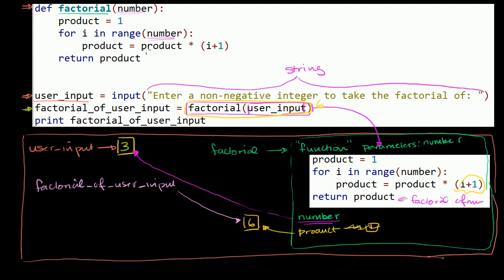And then we run this as if number was 3, and then we return product, which is going to be the factorial of number. And so this whole thing evaluates to the factorial of whatever was in here, so the factorial of 3. And so factorial of user input, this variable will now refer to that, because it's being assigned to that. And then we print it.